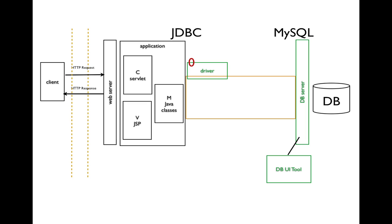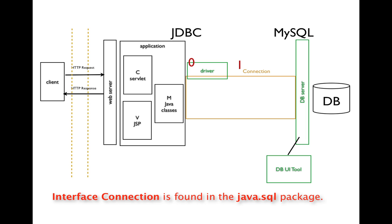Once we have the driver, we need to establish the connection. The connection is shown as the orange box connecting our application to the database server. We do that by declaring a Connection object — the Connection class is part of the collection of classes used within JDBC. Once we have the driver, we can use it to create our connection, and at that point you can think of having a tunnel that goes from our JDBC application to the MySQL database server.